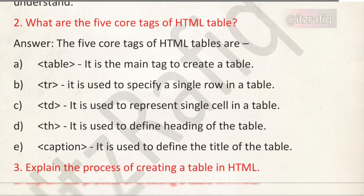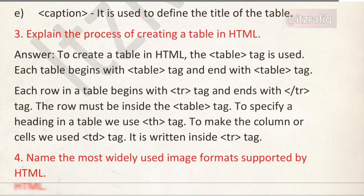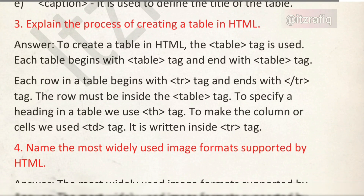What are the five core tags for tables? They are: table, tr, td, th, and caption. According to the marks, you write the answer accordingly — if it is one mark, write only the tag names; if it is three or four marks, write the definition of each tag. Number three: explain the process of creating a table in HTML — that part is already on the screen, you can refer to it.